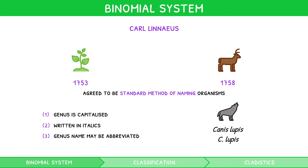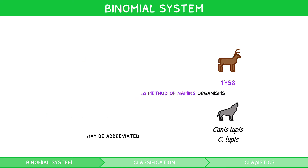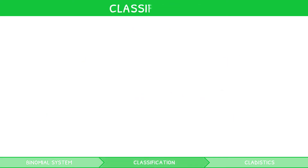So you now know how organisms are named, but what about their classification? All organisms can be organised into groups known as taxa. The eight main taxa follow a distinct hierarchy.